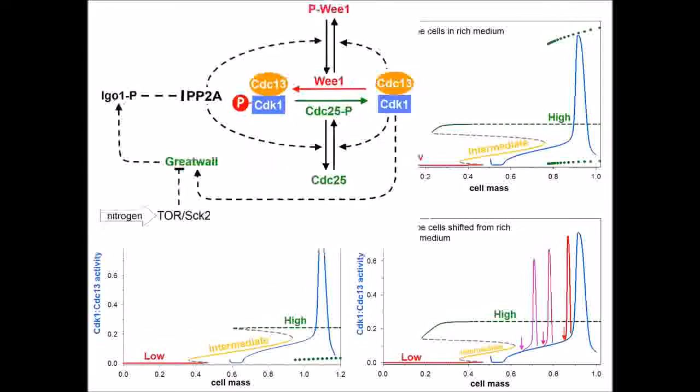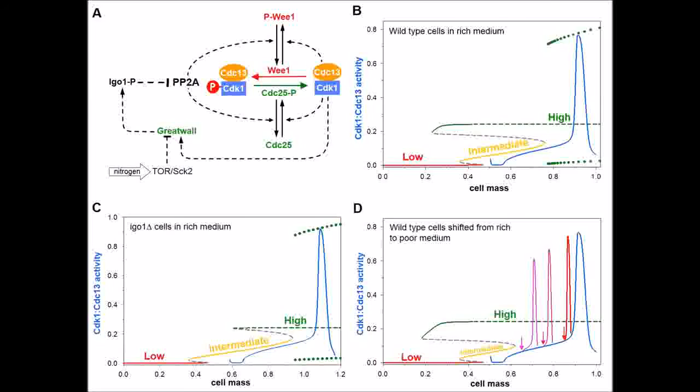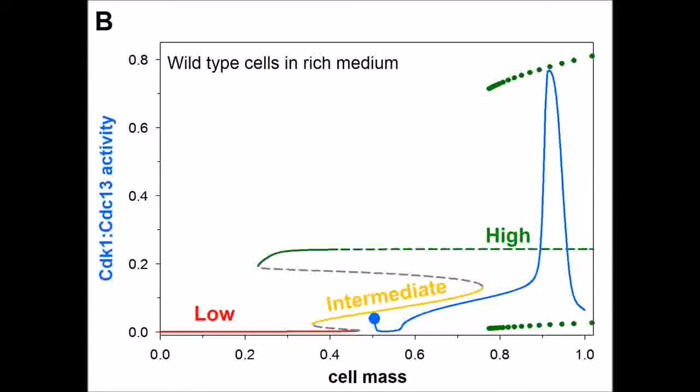In rich medium, PP2A maintains CDK1-CDC13 activity at intermediate values in cells smaller than mitotic threshold size, which corresponds to the right edge of the yellow curve. Once the size of the growing cell exceeds the critical size, CDK1-CDC13 becomes activated and the cell executes mitosis and cell division.